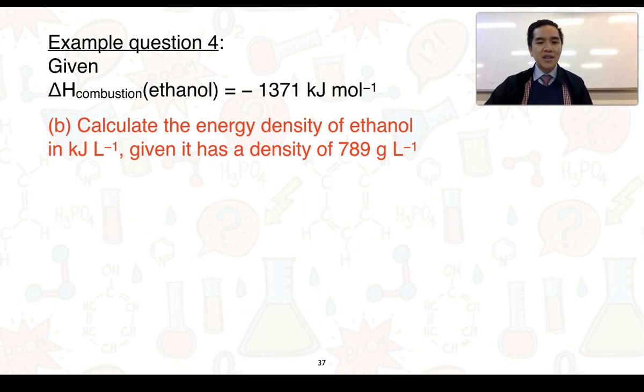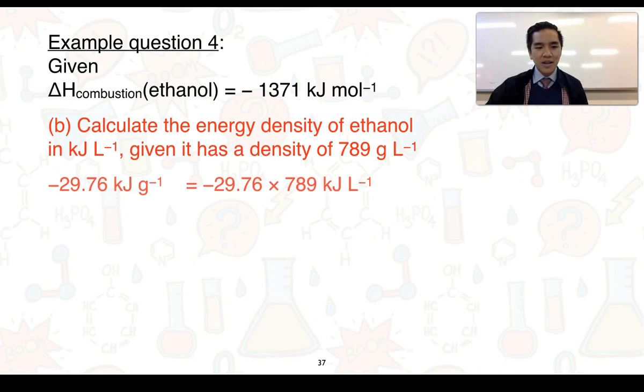For part b, calculate the energy density of ethanol in kilojoules per liter given it has a density of 789 grams per liter. Keep in mind that the density essentially says that if we have one liter of ethanol it has a mass of 789 grams. To convert into the energy density in kilojoules per liter, what we can do is take the specific energy in kilojoules per gram and multiply it by the density.